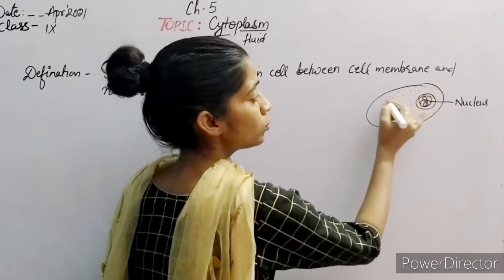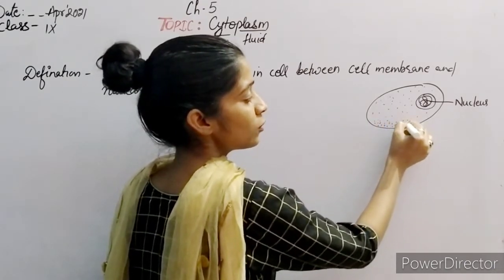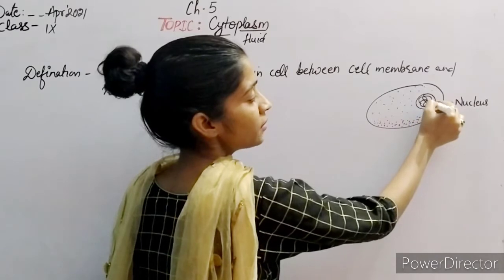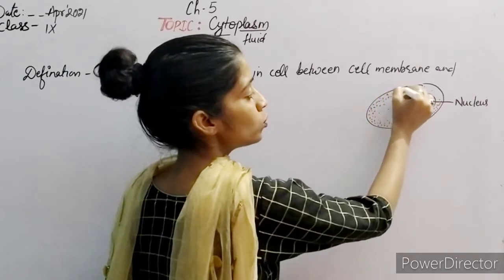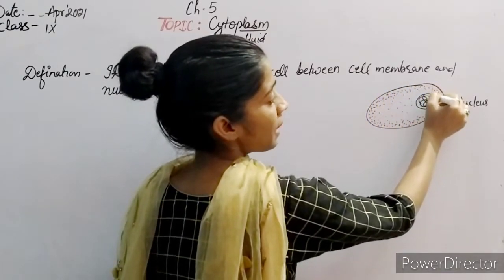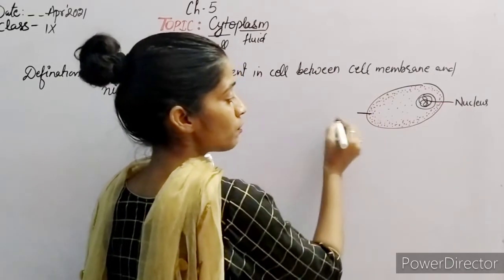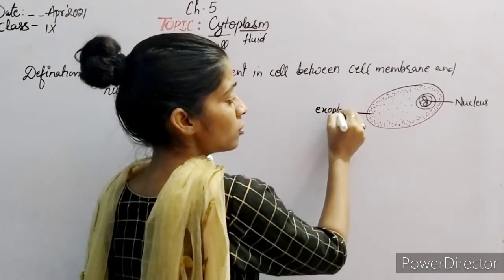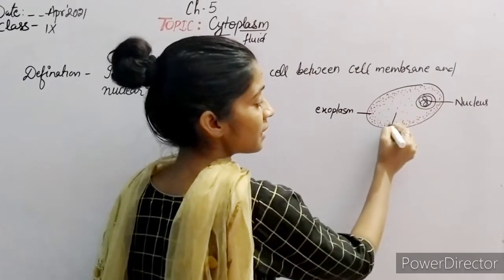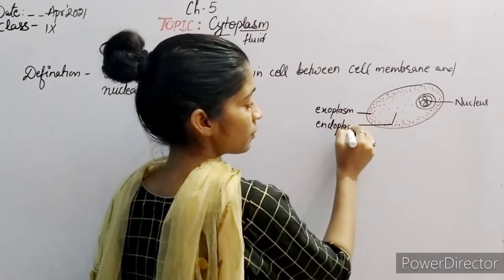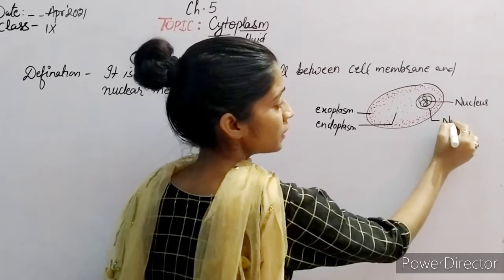In the cell, the cytoplasm is divided into two regions. It is more dense at the periphery region — this outer part is called ectoplasm. Exo means outside. And inside, it is called endoplasm.